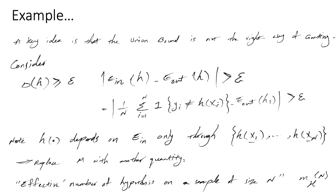So we define the effective number of hypotheses on a sample of size N as the value M of H of N. We want to find a way to define an effective number that is related to the number of data samples in X.